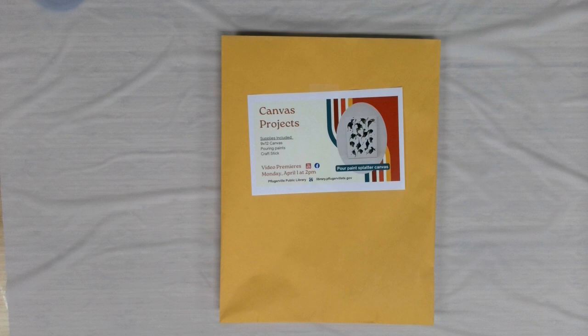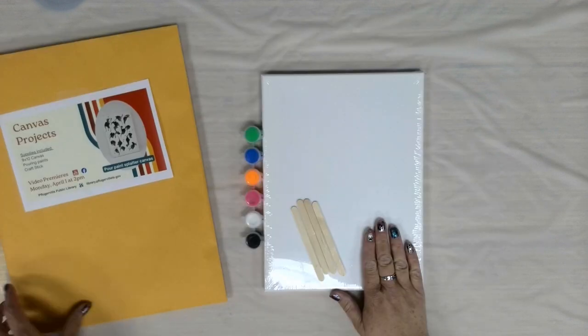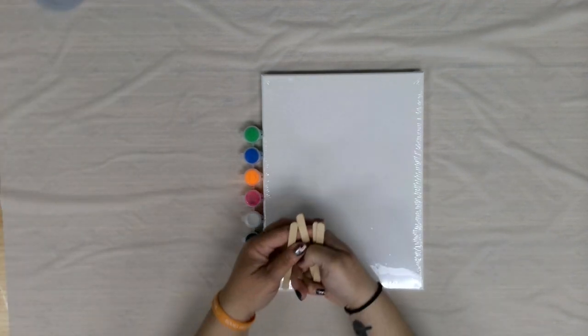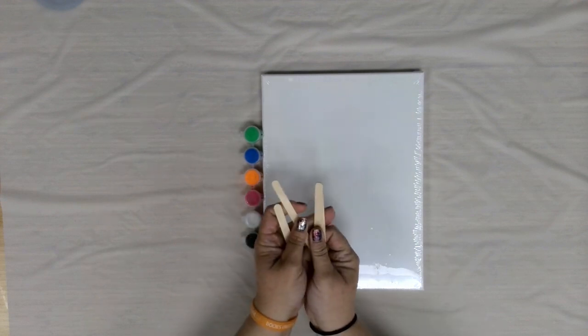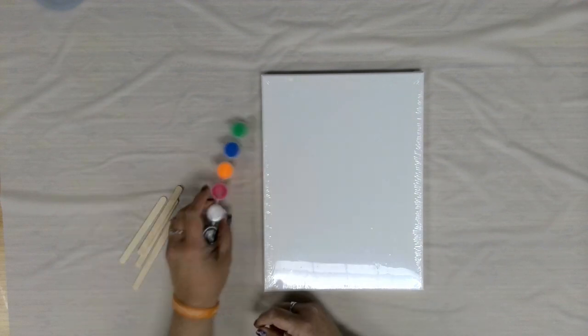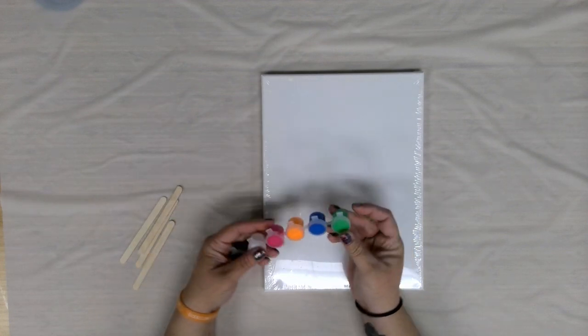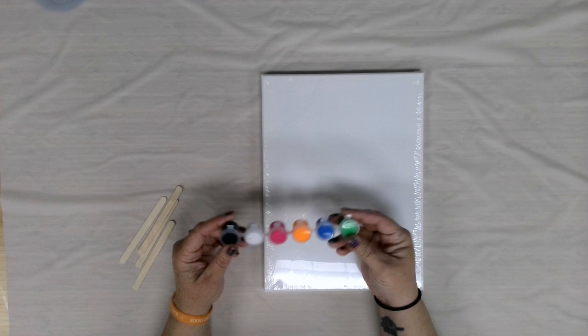This month's project materials are in our big envelope, because we've got a 9x12 canvas this month. They are all wrapped in plastic. We included four of a smaller craft stick, and then you have the six paint pot set here with some neon colors and a white that's a little bit more liquidy than maybe you'd expect with some regular acrylics.